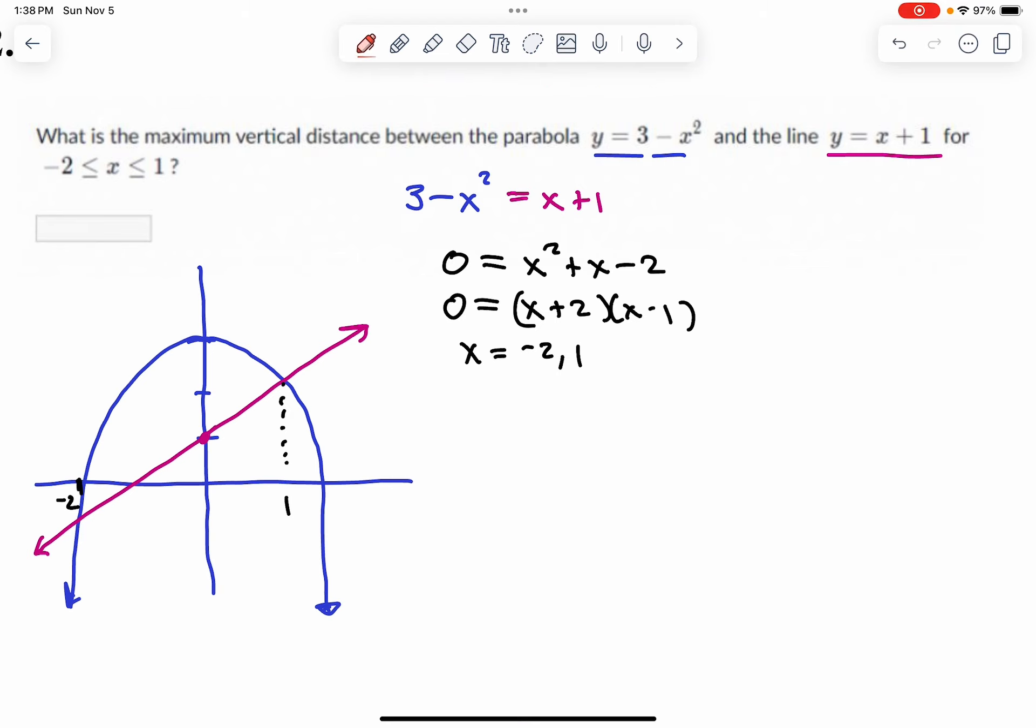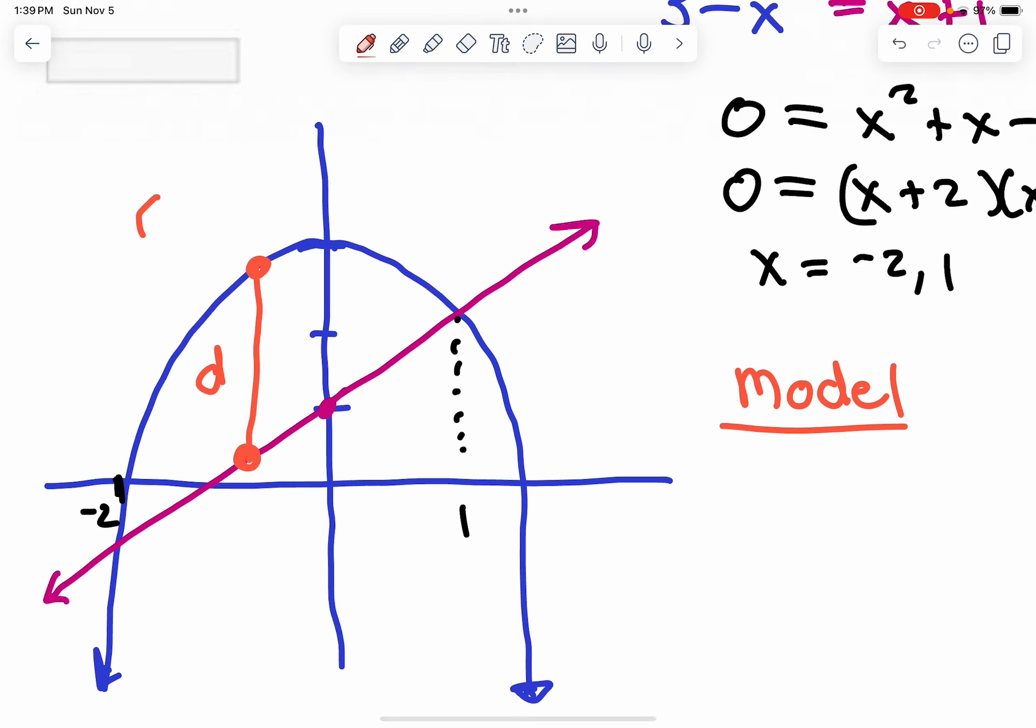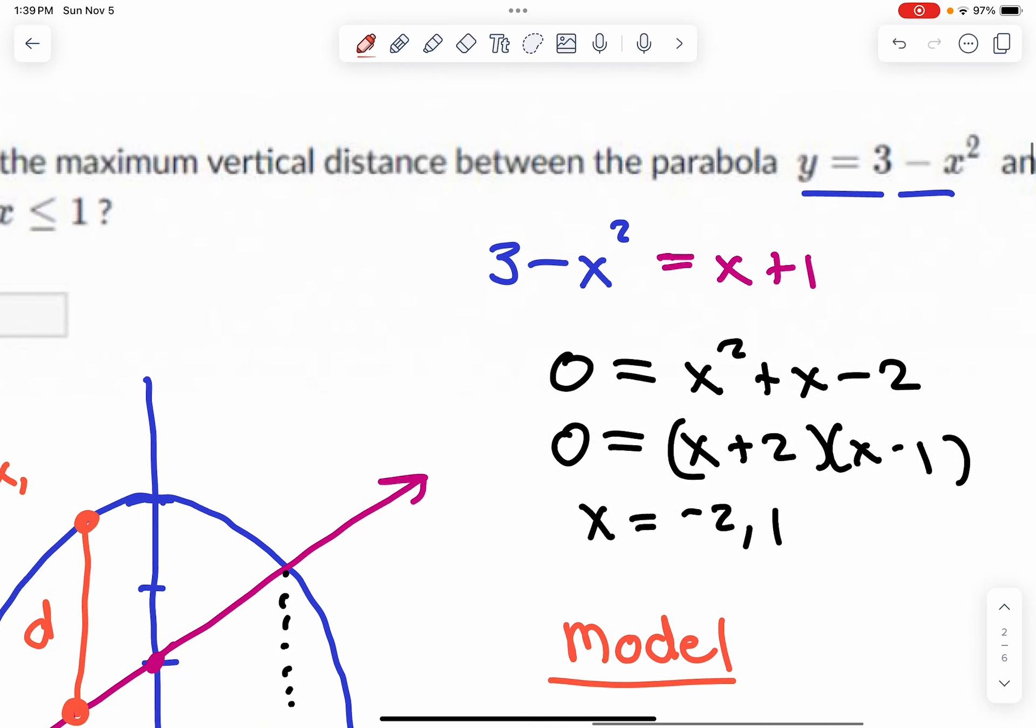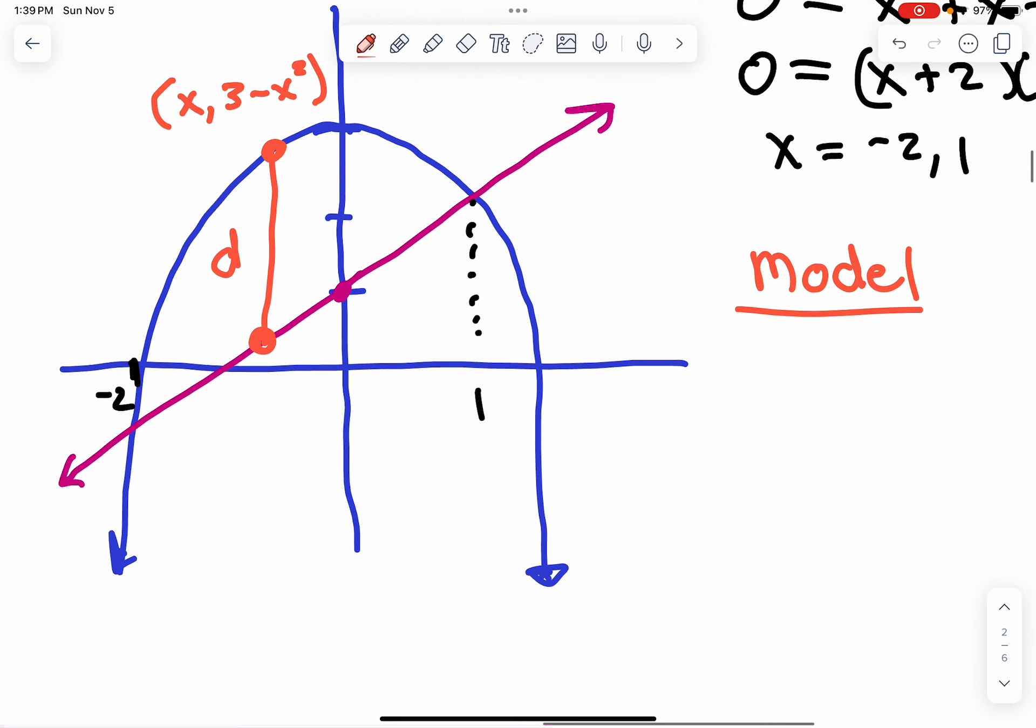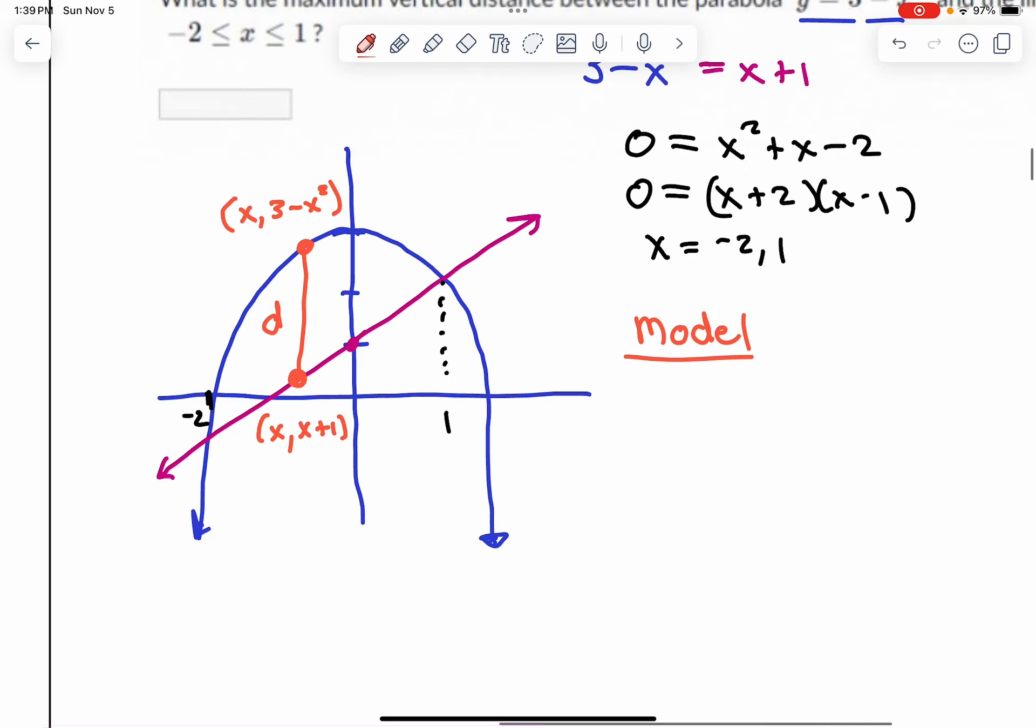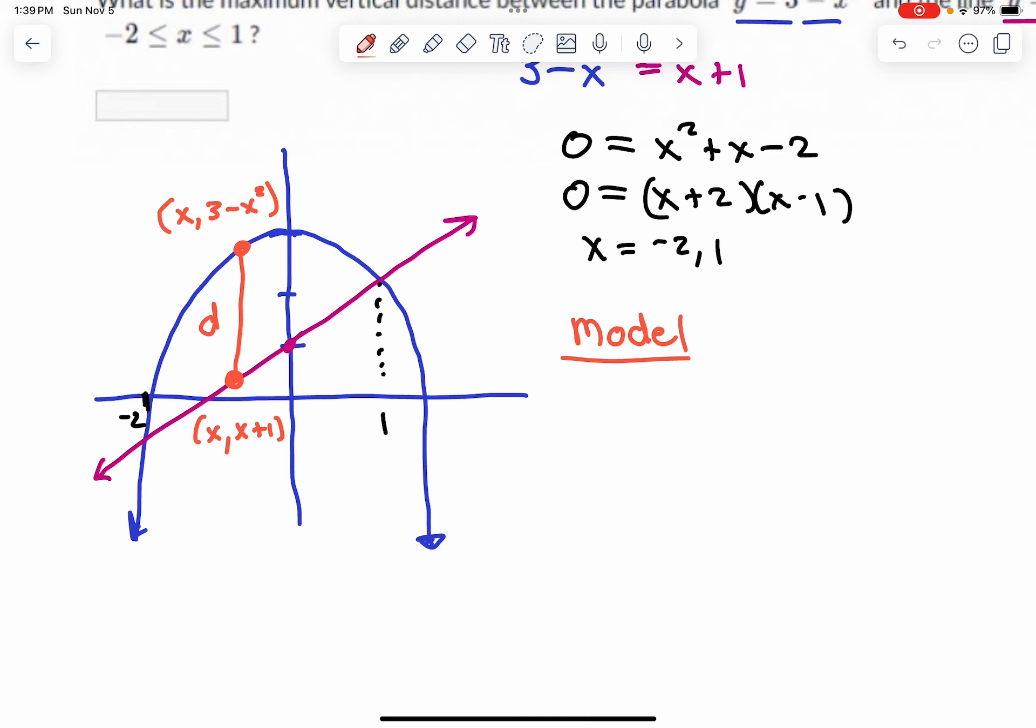So now we need a model. Any point on this parabola, so we want to represent that distance d. Any point on this parabola has coordinates x, comma, 3 minus x squared. Any point on this line has coordinates x, comma, x plus 1. If you want a vertical distance, you subtract y-coordinates. That minus that is the vertical distance. And that distance varies between negative 2 and 1, but we want to find where it's a maximum.